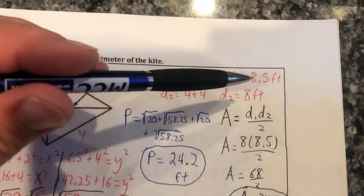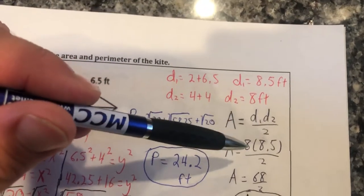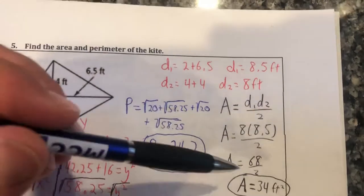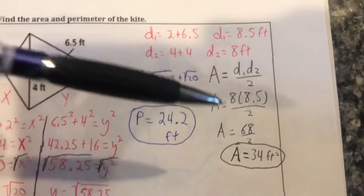So we have our two diagonals; we're gonna plug those in, so we have 8.5 times 8 divided by 2. Multiply those together you get 68, divide that by 2, we have an area of 34 feet squared.